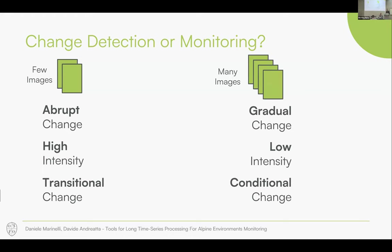Let's look at three different classes of changes and position them on a scale from abrupt to gradual. Windthrow — Vaia is a good example here in Trentino Alto Adige — represents abrupt, high-intensity, transitional changes, because we shift from forest to non-forest areas.